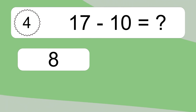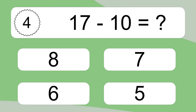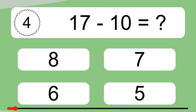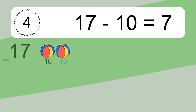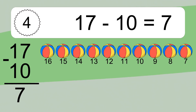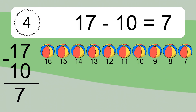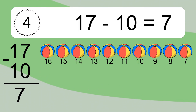17 minus 10 equals what? 17 minus 10 equals 7. Let's count it: 16, 15, 14, 13, 12, 11, 10, 9, 8, 7.